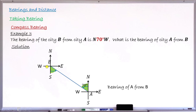Since this angle is 70 degrees, using compressed bearing it means we are measuring the angle from the line pointing south towards east. So I'll write the bearing of A from B as S70°E. This line is the line pointing south, and the angle is 70 degrees towards east. So the bearing is south 70 degrees east — S70°E. This is how we take a compressed bearing, and these are the basic things we need to learn.